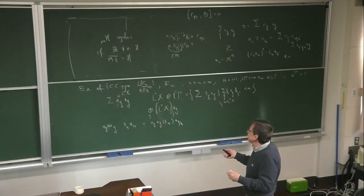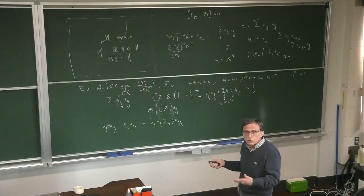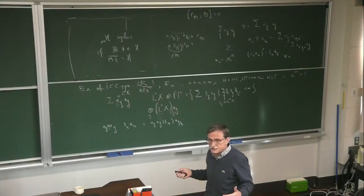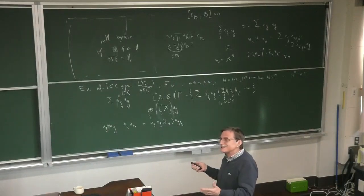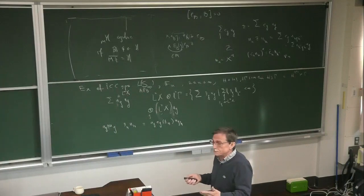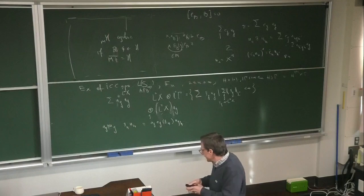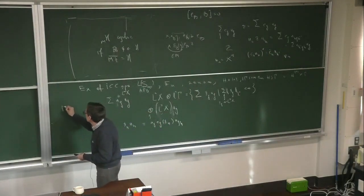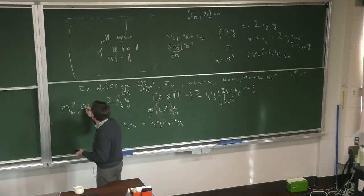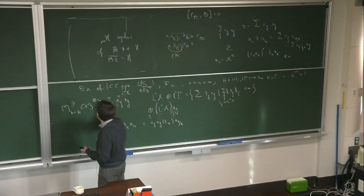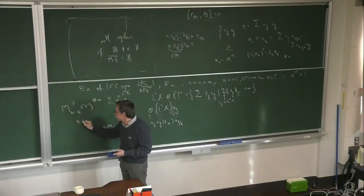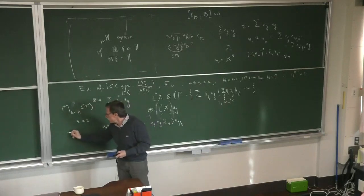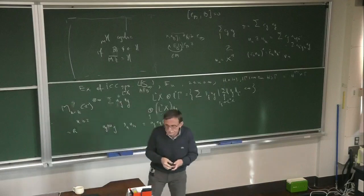Also, if you take infinite tensor product of 3 by 3 — or any n by n — matrices, the same way we did with the hyperfinite one taking K=2, you can take any K larger than 2 and the result will still be R, by Murray–von Neumann. Let's take a short break, maybe until ten minutes past, and then we'll go on. The next thing we'll do is introduce the notion of amenability for von Neumann algebras.